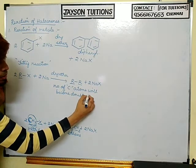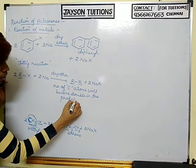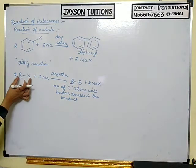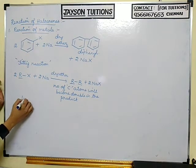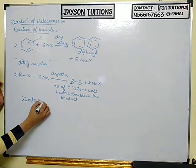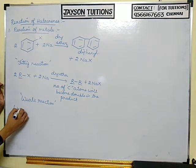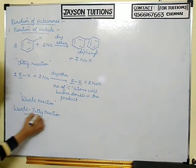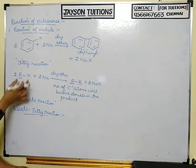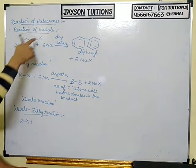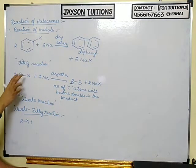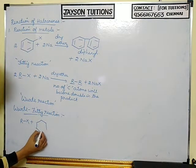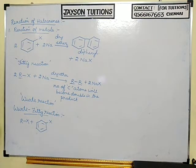So the number of carbon atoms doubles in the product. If the reaction is done with halo-arene, it is called a Fittig reaction. If done with halo-alkane, it is called a Wurtz reaction. Wurtz-Fittig reaction means one halo-alkane and one halo-arene together.